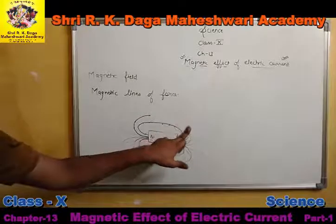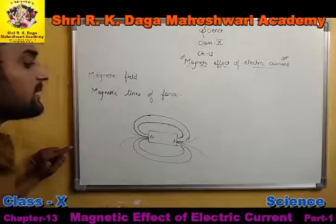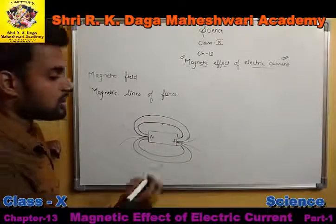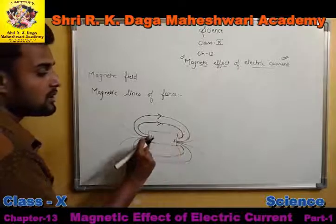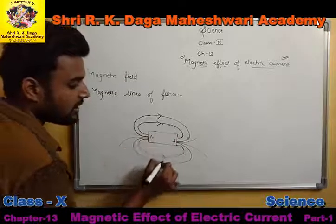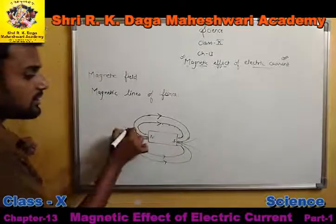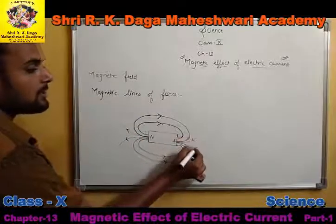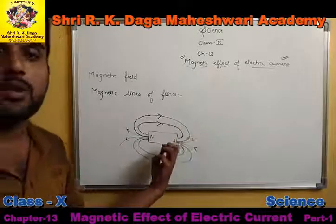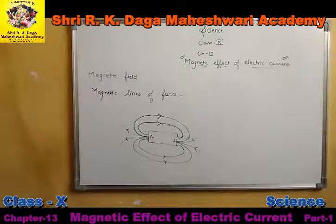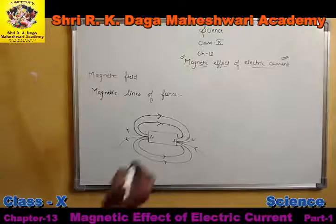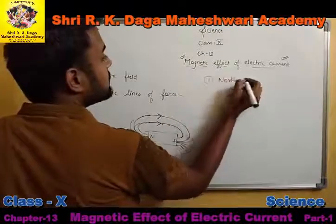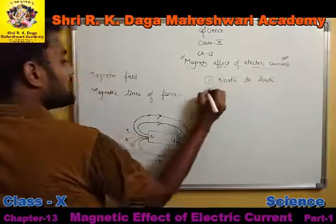The magnetic lines of force have certain characteristics. The first characteristic is that magnetic lines of force always go from the north pole to the south pole — the arrow always points from north to south. Inside the magnet, they go from south to north. Always draw the arrow coming out of the north and going toward the south; if you don't, the diagram will be wrong. The magnetic lines of force always go from north to south, never from south to north.